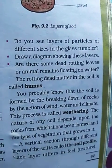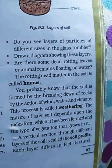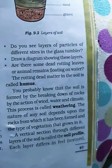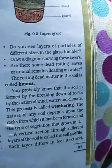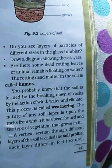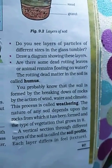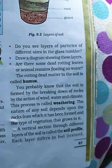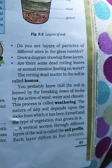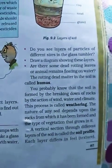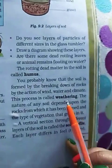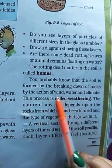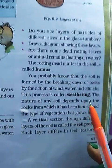Soil is formed by the breaking down of rocks. Large pieces of rocks develop cracks or crevices and, with due course of time, these large pieces of rock turn into fine particles of soil. This is primarily done by the action of wind, water and climate. This process is known as weathering. Underline the statement: soil is formed by the breaking down of rocks by the action of wind, water and climate — this process is known as weathering.